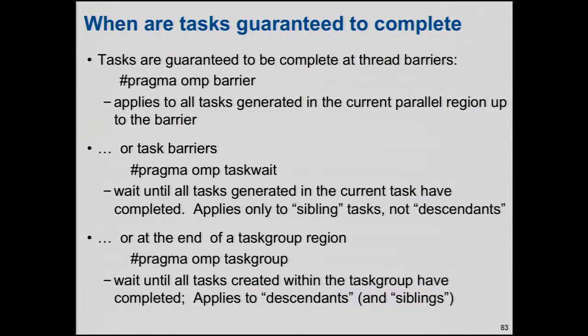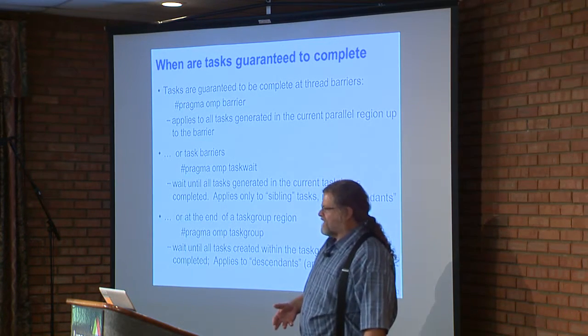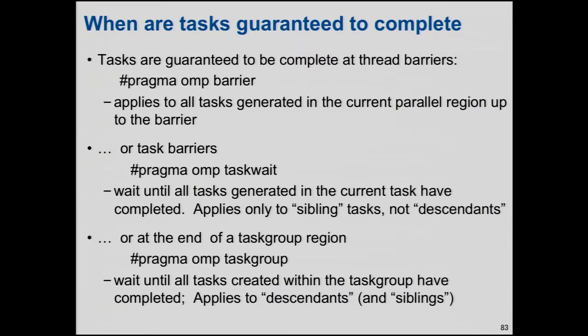The task construct gathers up the data environment, packages it up into a task, and may either execute it immediately or defer it. We can't over-specify; we have to give implementations flexibility. A task may execute right away or go into a queue for deferred execution. Tasks are guaranteed to complete at associated barriers: a pragma OMP barrier, the implied barrier at the end of a single, or a task wait construct. The task wait says the current task waits until the tasks it generated complete.